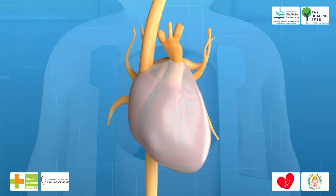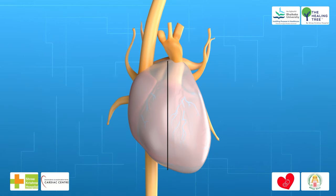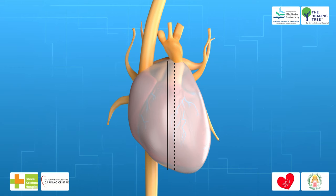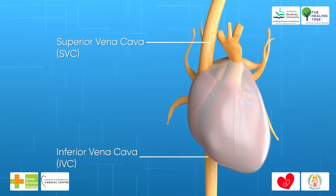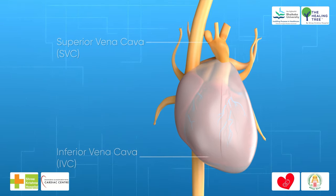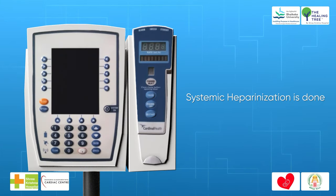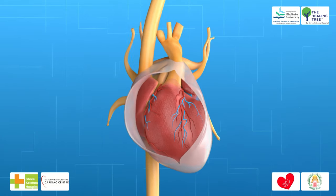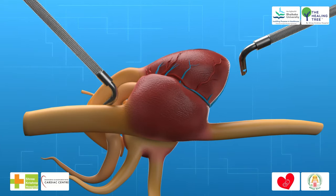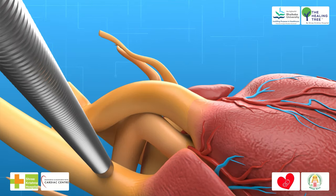Step 3: Pericardium is opened to the left side of midline, keeping extra length of pericardium to the right. Step 4: Extra pericardial dissection of both vena cavae — superior vena cava (SVC) and inferior vena cava (IVC) — is performed. If IVC dissection cannot be performed due to unstable hemodynamics, proceed to go on CPB with single SVC and two-stage right atrial cannulation. Step 5: Systemic heparinization is done.